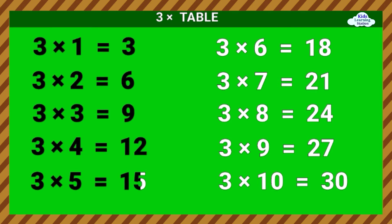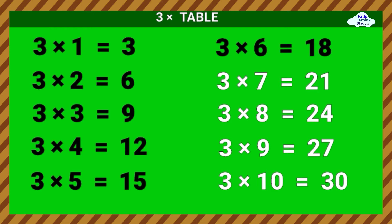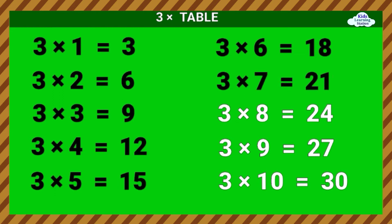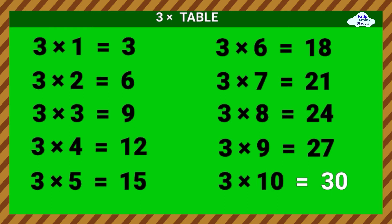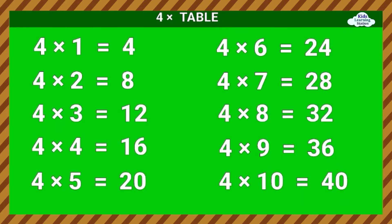3 times 3 equals 9. 3 times 4 equals 12. 3 times 5 equals 15. 3 times 6 equals 18. 3 times 7 equals 21. 3 times 8 equals 24. 3 times 9 equals 27. 3 times 10 equals 30. Four Times Table.